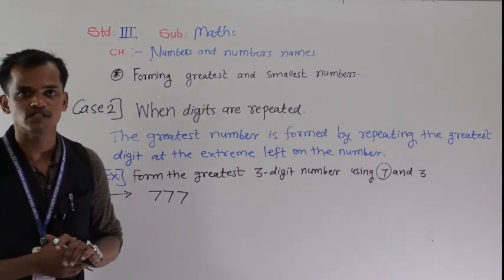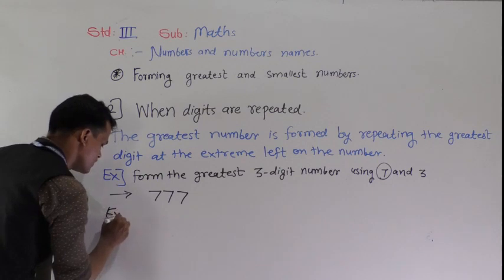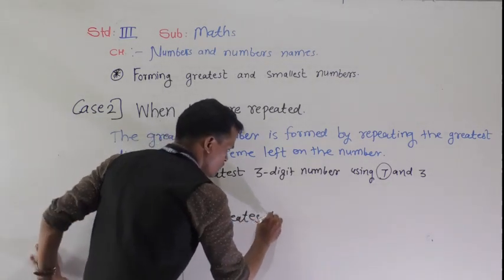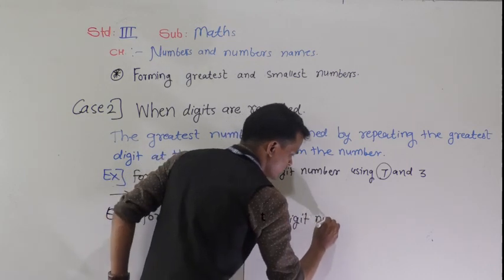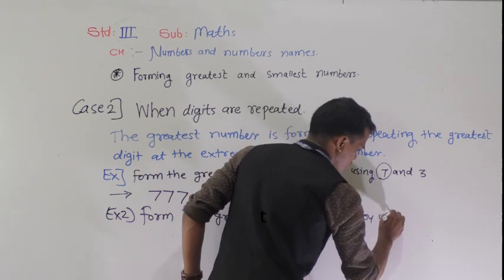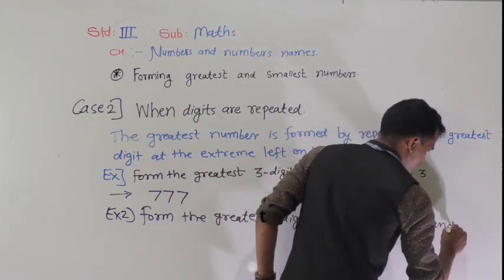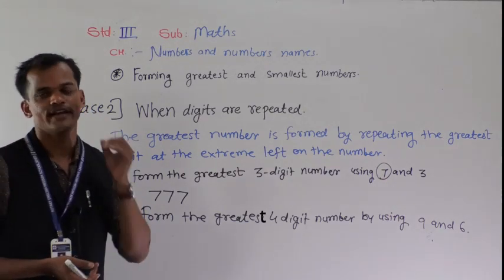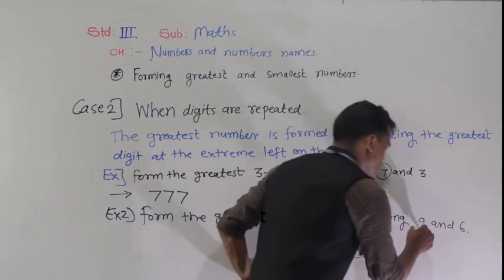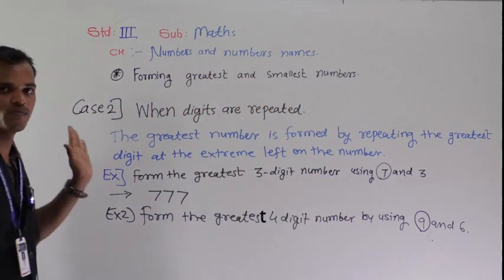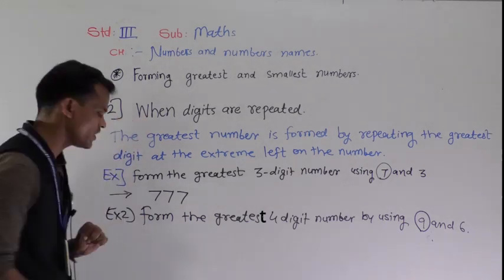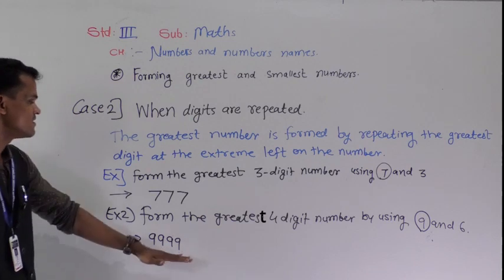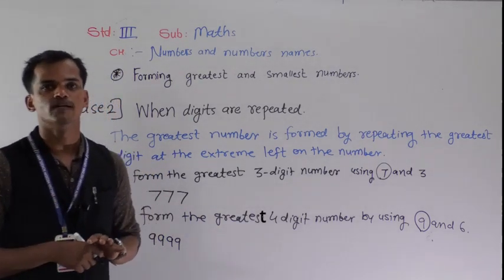One more example: form the greatest 4-digit number by using 9 and 6. Which is the greatest digit? 9. So start from the left side and repeat 9 four times: 9999. This number 9999 is formed. Repetition of the digit is allowed — we can write the digit more than once.